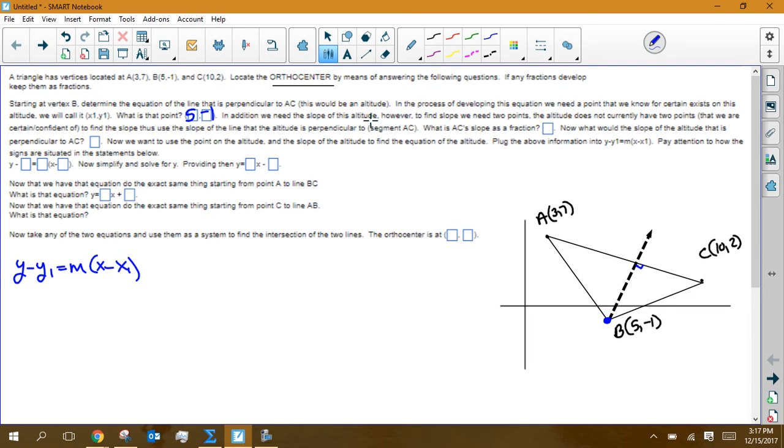And this says, in addition, we need the slope of this altitude. So I asked you to go through and find the slope of AC. So find the slope of AC. You take the y values, 7 and 2, you subtract them, and take the x values, and subtract in the same order.